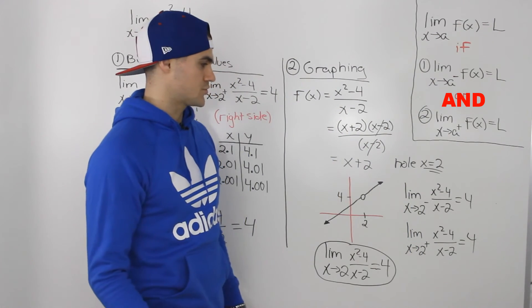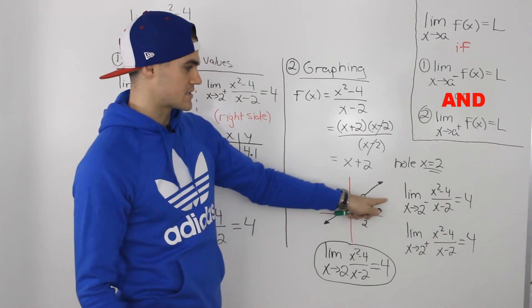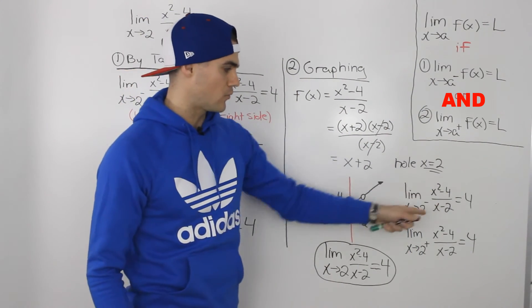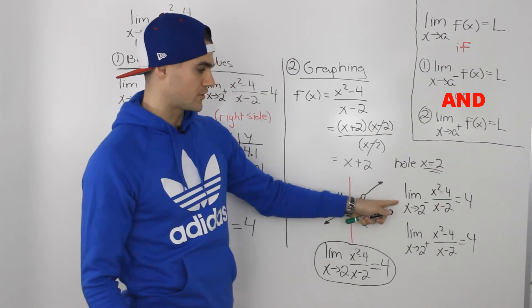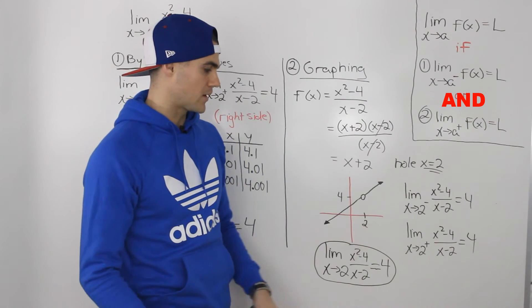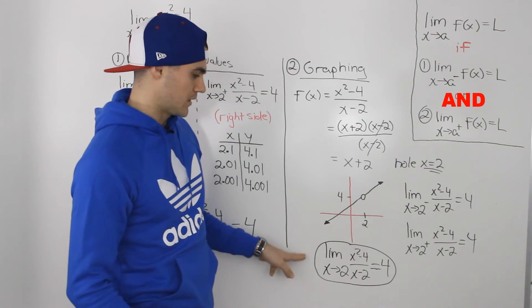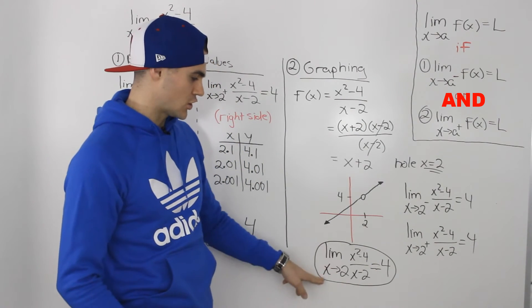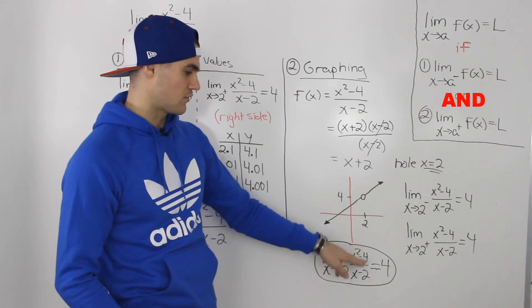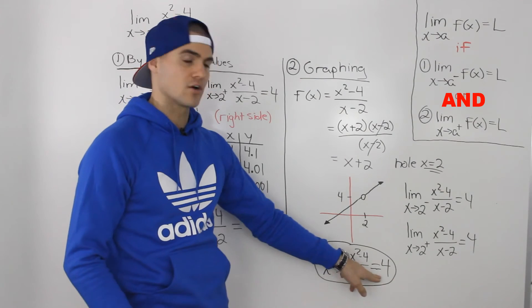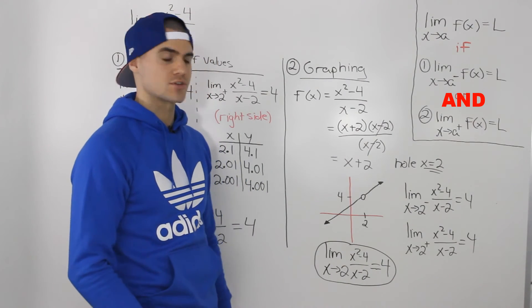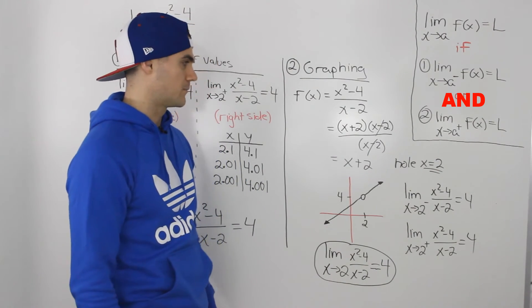So in conclusion, because the function is approaching the same y value from both the left side and the right side, we can say that the general limit as x approaches 2 of this function is also equal to 4.